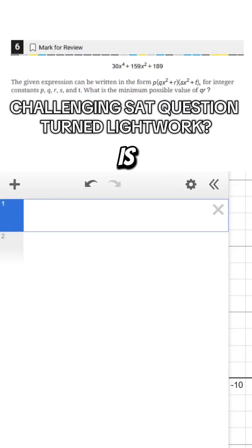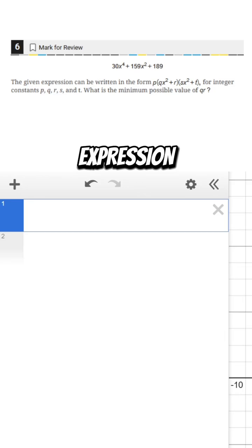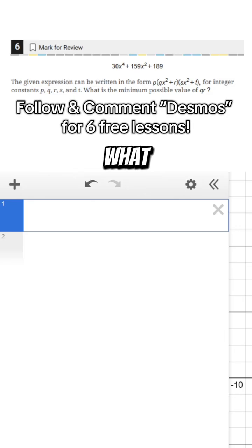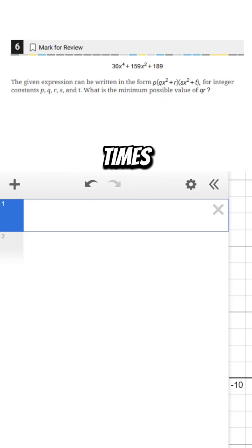This question might look hard but with Desmos it is so simple. We're told the given expression can be written in this form for integer constants p, q, r, s, and t. What is the minimum possible value of q times r?